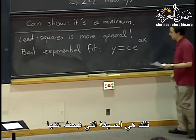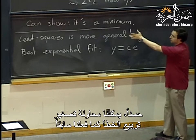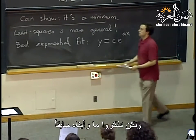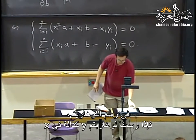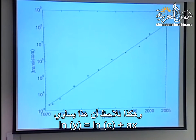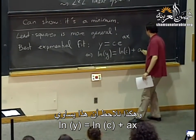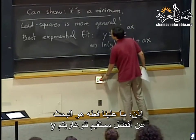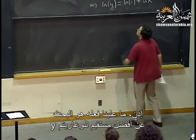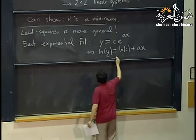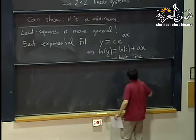Moore's Law says the number of transistors on the chip doubles every 18 months or every two years. To find the best exponential fit y = c · e^(ax), you observe this is equivalent to ln(y) = ln(c) + ax, which is a linear relation. So you just look for the best straight line fit for the log of y — something we already know how to do.